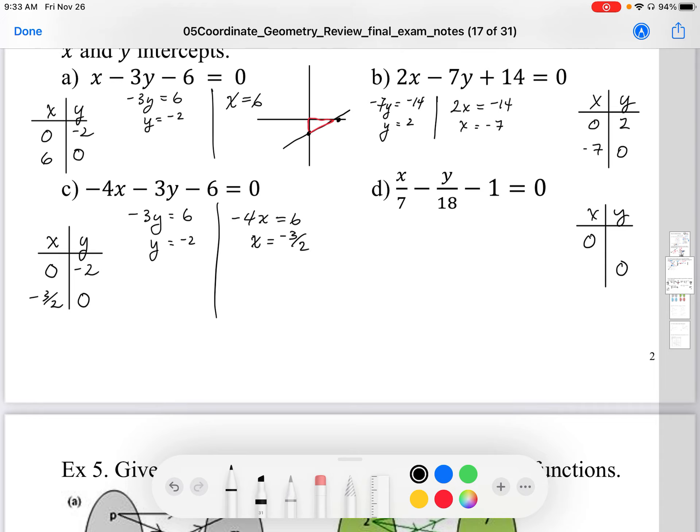So lastly, I'm going to plug in x is 0 for equation d. I'm going to end up with negative y over 18 minus 1, so I'm going to add 1 to both sides. I'm going to multiply both sides by negative 18, so I get y is equal to negative 18. And again, do the same thing for y is 0. x over 7 minus 0 minus 1, so I'm going to add 1 to both sides. Solve for x, I get x is 7.